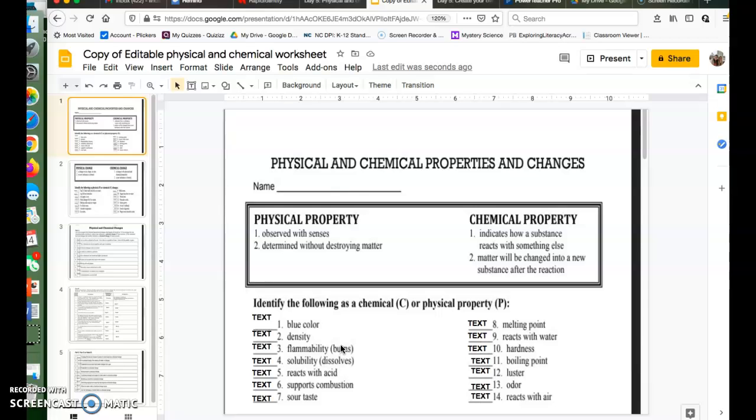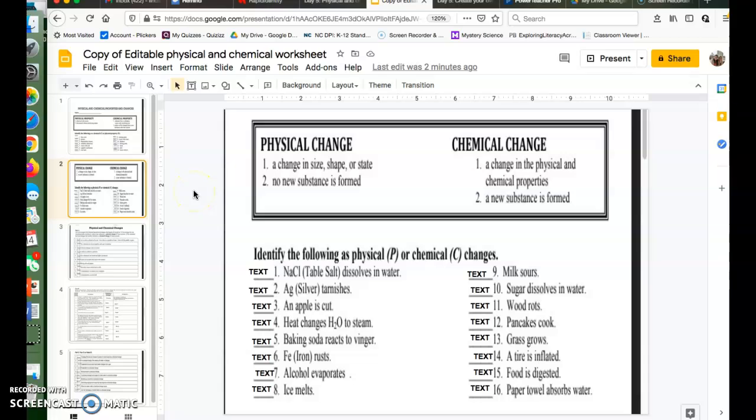Flammability, or the ability for it to burn, because this is indicating a substance that reacts with something else, in this case oxygen, and the matter will be changed into a new substance after. It is considered a chemical property, so you would type a C. Okay, so that is how you do these ones. You're going to do the rest by yourself.